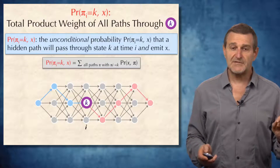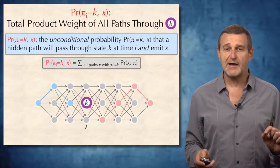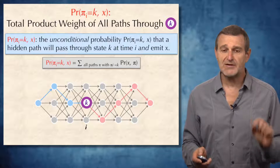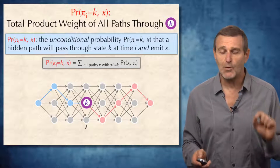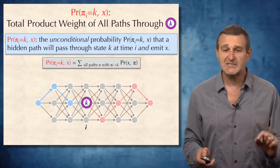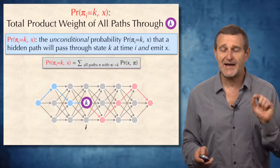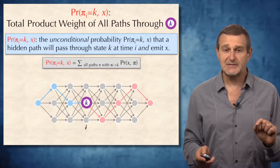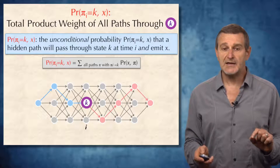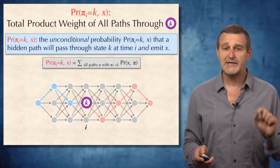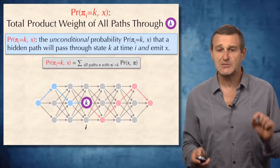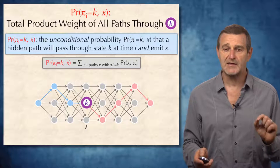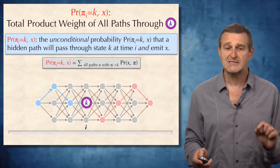After we defined the notion of probability π(i)=k,x, we noticed that this is simply the probability of all paths passing through the node corresponding to state k in the i-th column of the HMM Viterbi graph. This probability can be computed as the sum over all possible paths π such that π(i)=k of the probabilities of x and π.